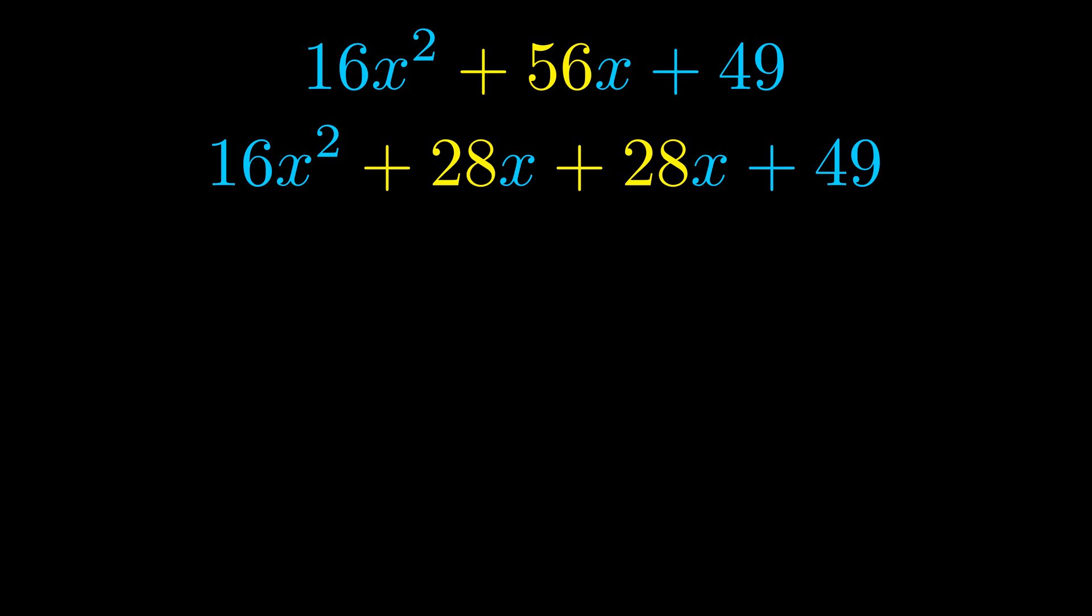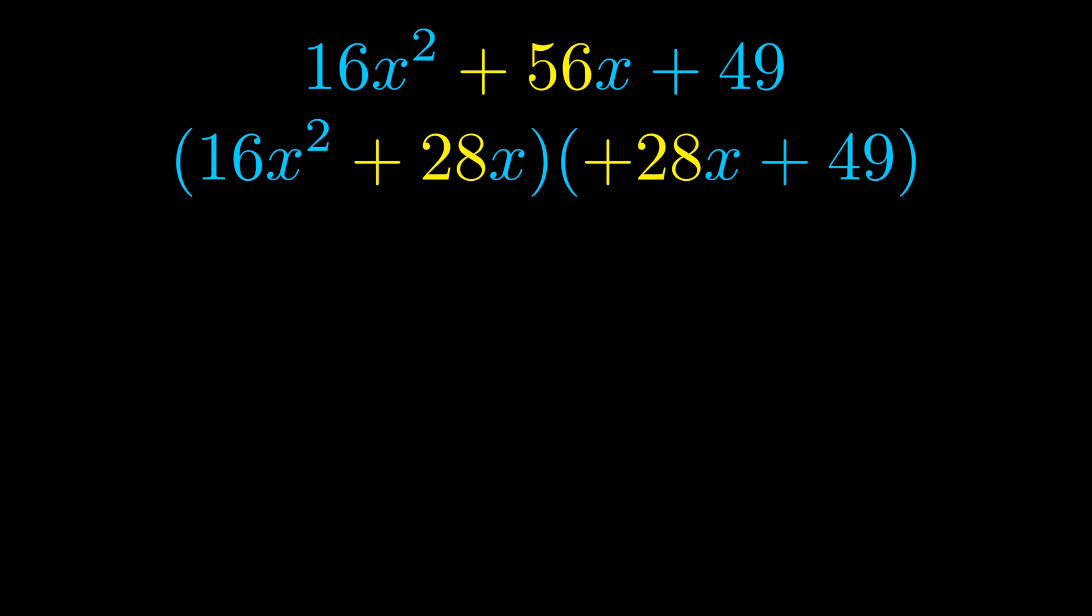Once we've done this, we go ahead and we put parentheses around the first term and the last term. And we do that so that we can take the greatest common factor out of both terms. We can see the greatest common factor is now outside in green.